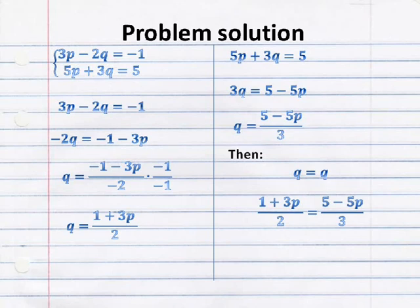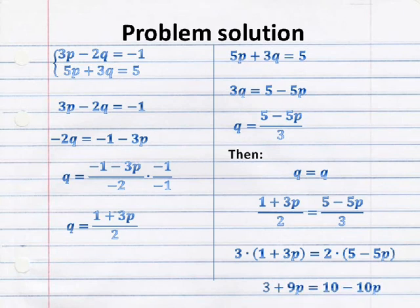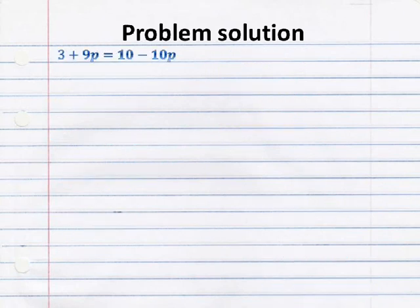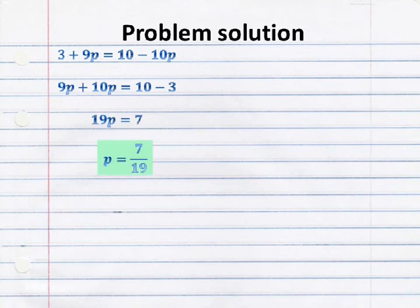Then we will have only one equation with the variable p, and then we have to clear p. It means to find the first answer, and we replace it in one of the original equations to find the value of q.